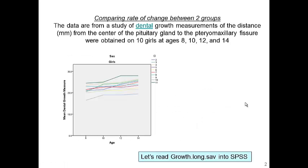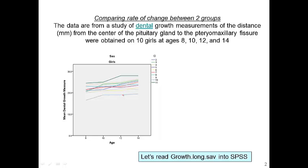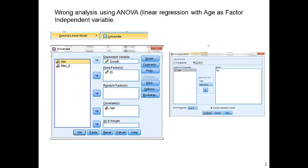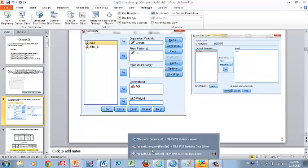Today's example is dental growth data among 10 girls, measured at age 8, 10, 12, and 14. Each line indicates a single girl — so this set of measurements is from one girl and this set is from another girl. There are 10 girls altogether. We'll use the SPSS dataset called growth.long.sav, which is a longitudinal data format.